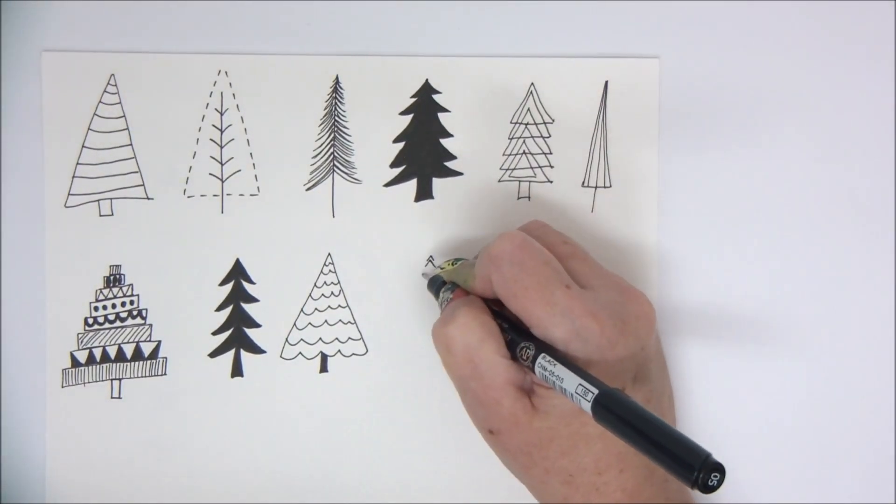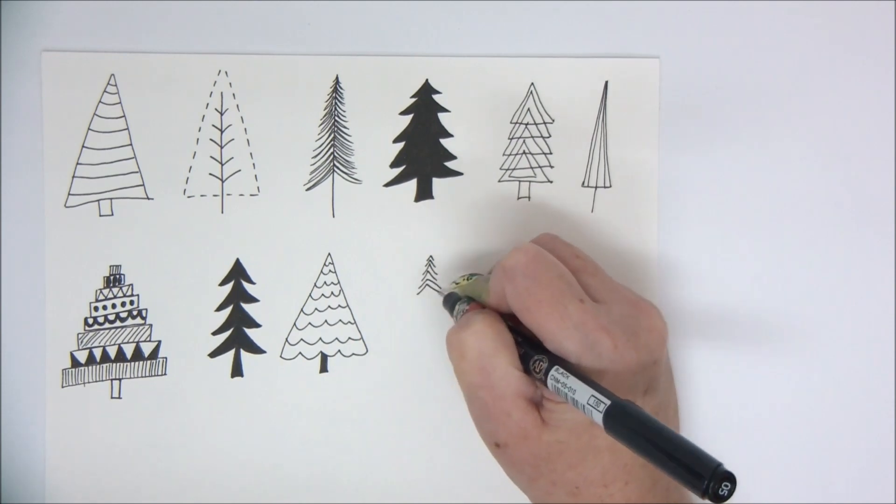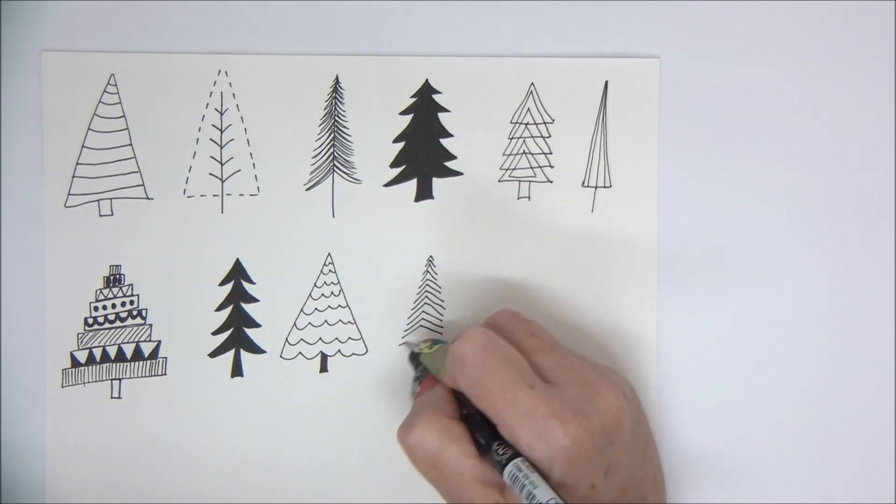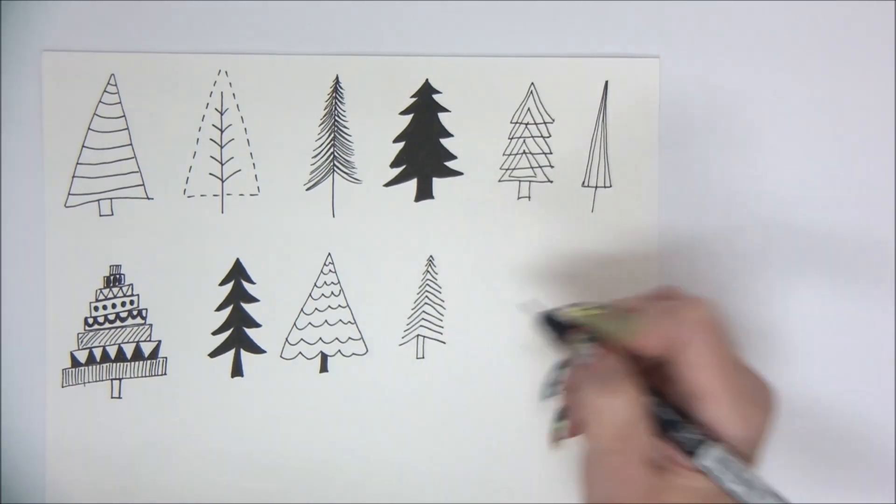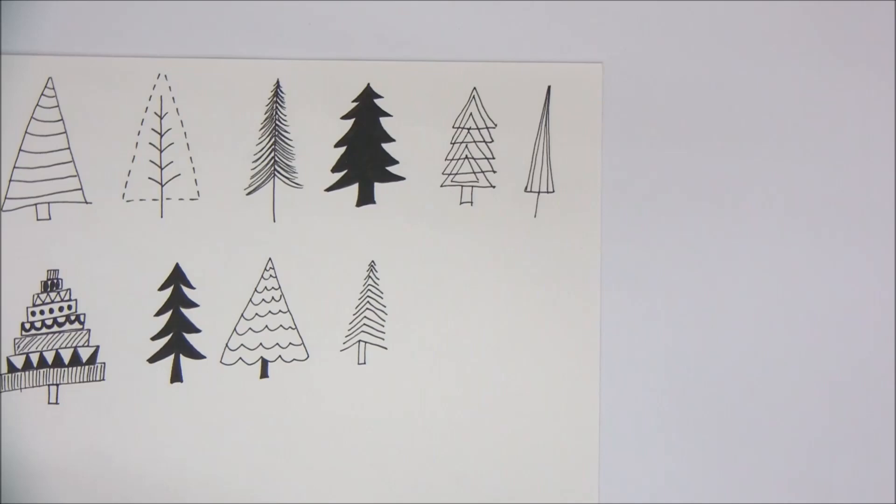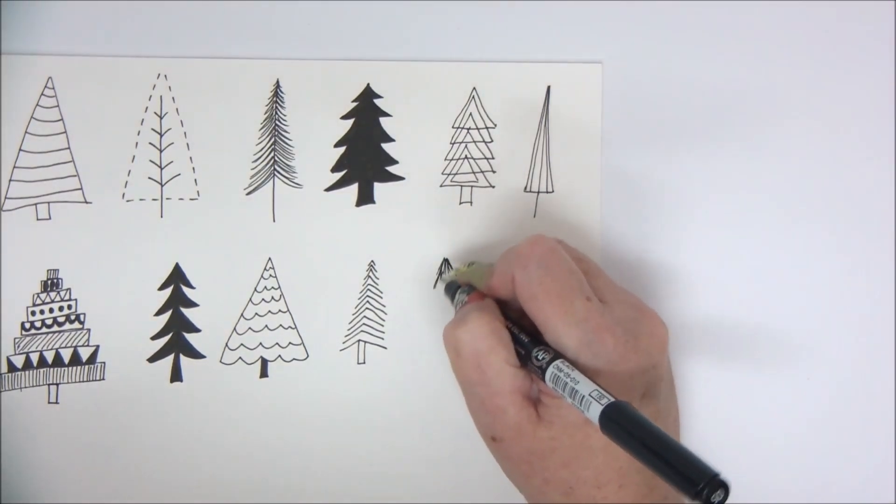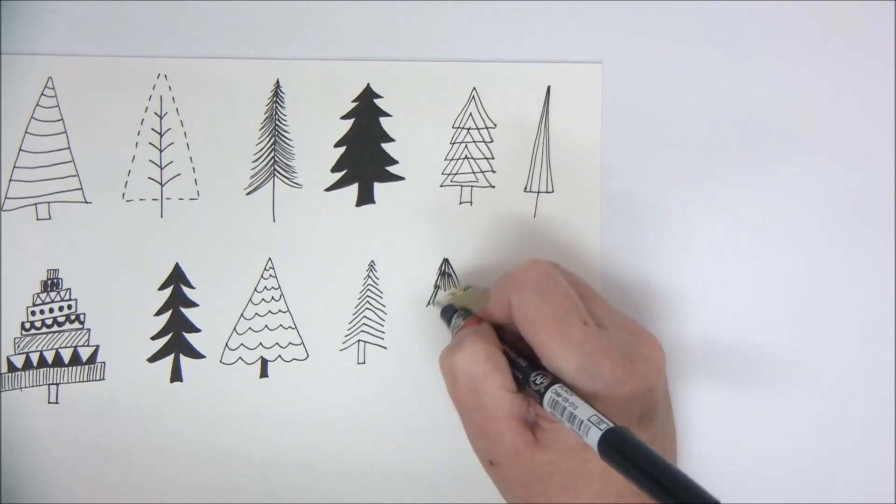Again, just by adding a few simple shapes or lines can make really great trees. So now little triangle lines with no base, going bigger and bigger. That tree came out a little crooked. This one is going to be some lines for the same.